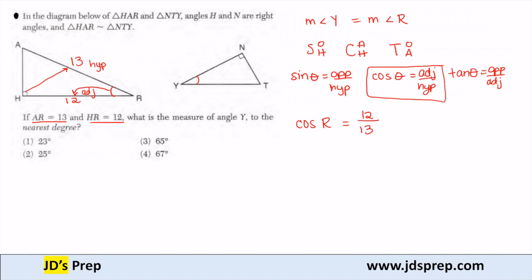In order to find that angle, to find the measurement of an angle, we need to use the inverse functions. So R is cosine inverse of 12 over 13, which we punch into our calculators, and we'll get the measurement of angle R to be about 23 degrees, which is number 1.